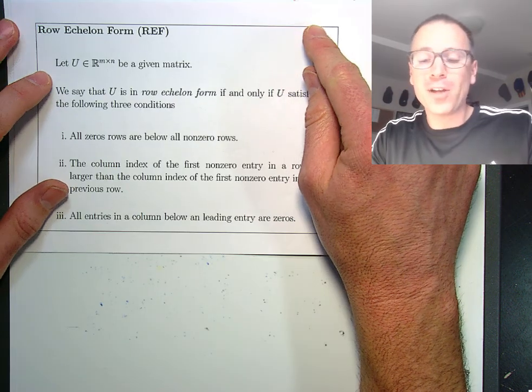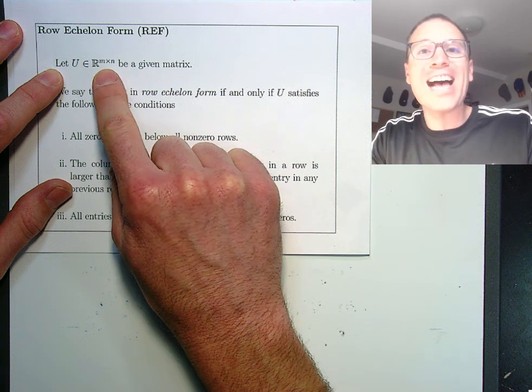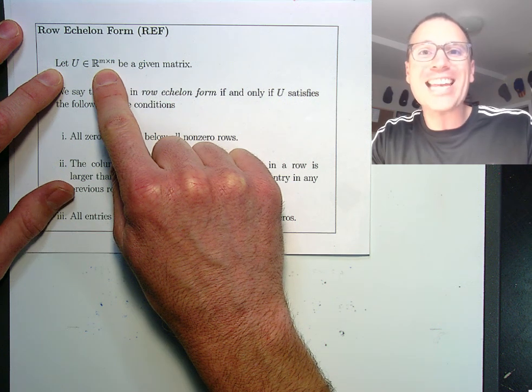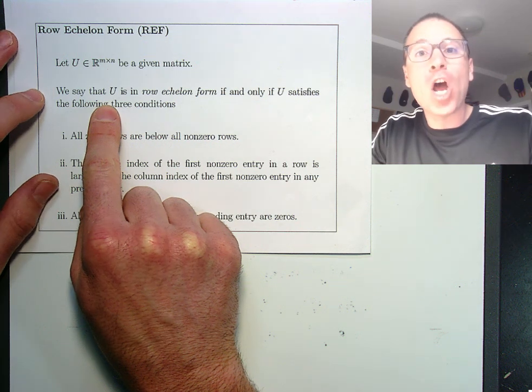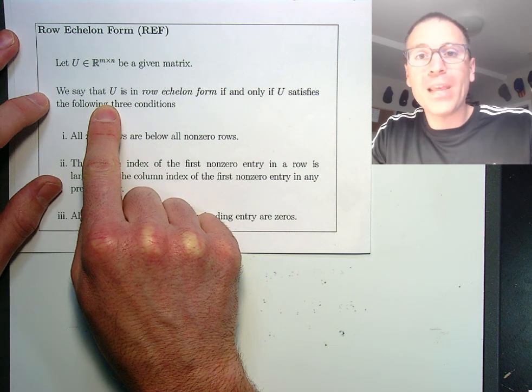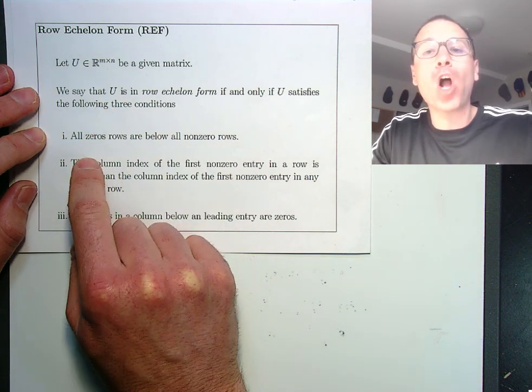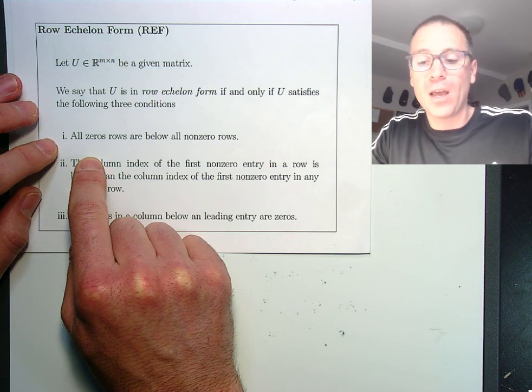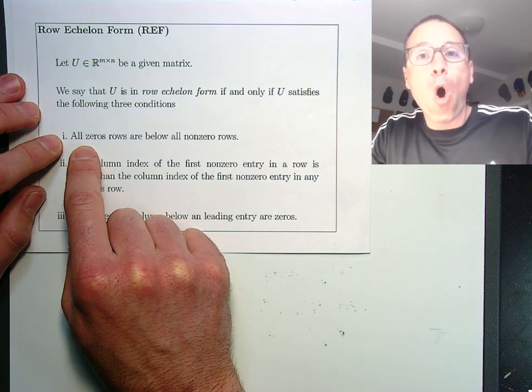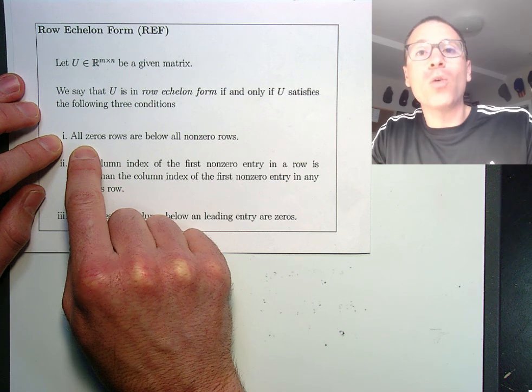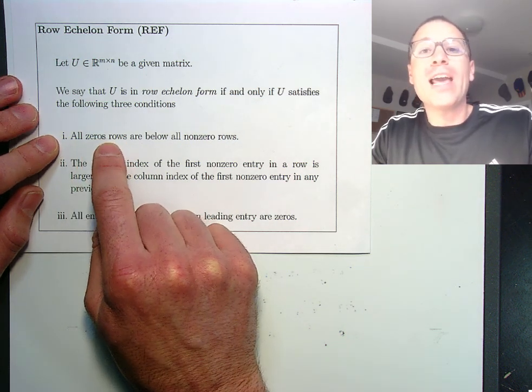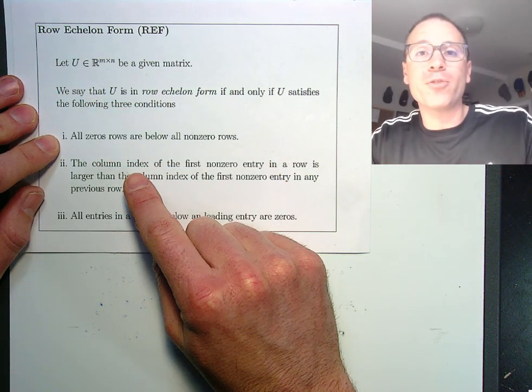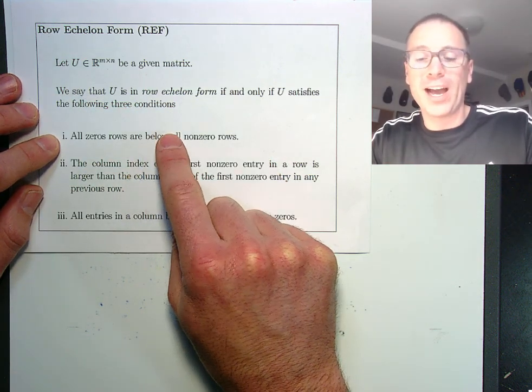Let's define row echelon form for a rectangular matrix U that has M rows and N columns. We say that U is in row echelon form if it satisfies the following three conditions. Number one, all zero rows are below non-zero rows. A zero row is a row that has all zeros. So if all the zero rows come at the bottom of the matrix, that's the first condition that we have.